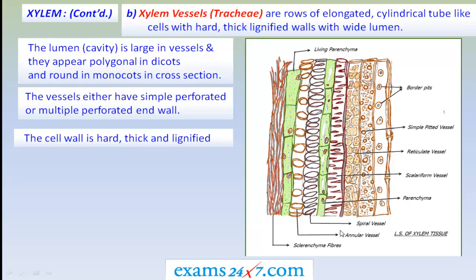As a result, we find varieties of tracheids and vessels in flowering plants. The simplest is annular, followed by spiral, scalariform, reticulate, and finally pitted xylem vessels and tracheids. In further advanced forms, there are bordered pitted vessels. All these kinds of vessels can be seen in angiosperms.